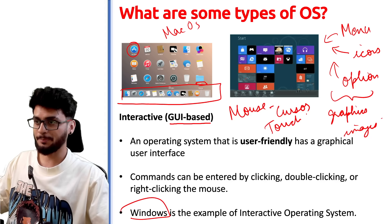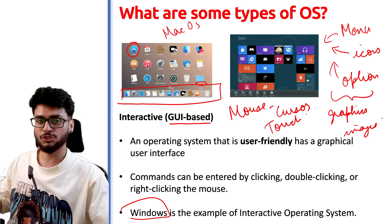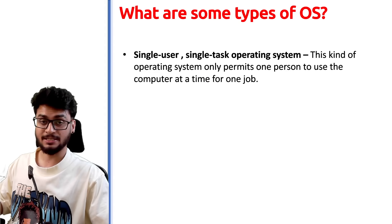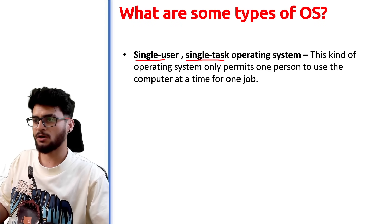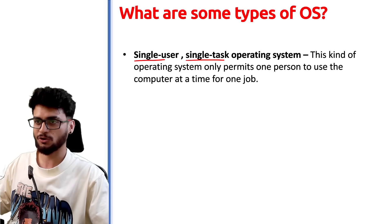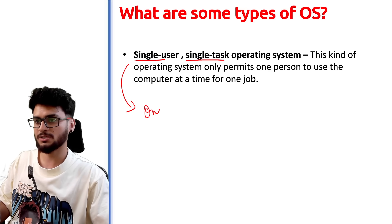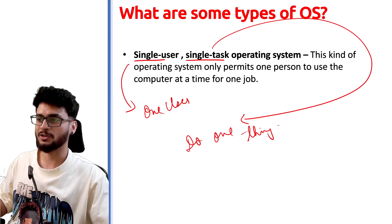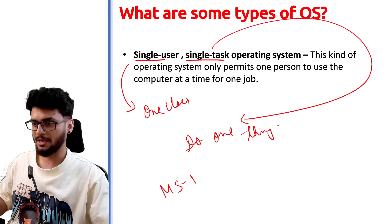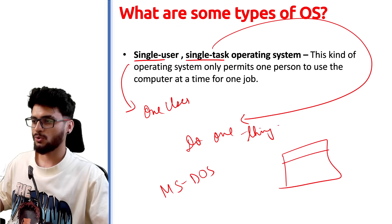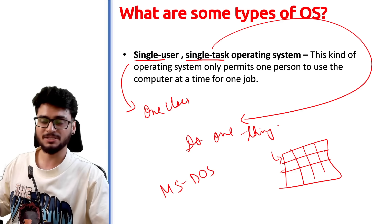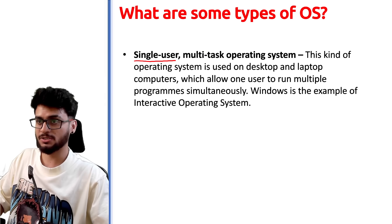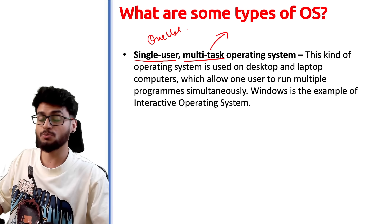Not only PC operating systems used on laptops, but also your Android and iOS devices fall under this category. Other types of operating systems include: Single User Single Task — meaning there is only one user and you can only do one thing at a time. An example is MS-DOS, which generally only ran tables where data could be stored and only one person could work at a time.